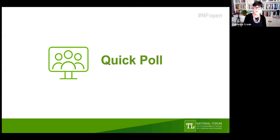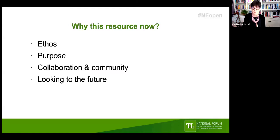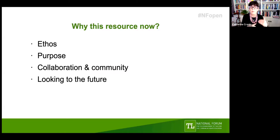It's really useful knowing that some people here are beginners or want to learn more and some are already supporting others. This was very much our intention in developing the resource — we thought it could be useful for people who just want to learn more as individuals but also for those already supporting others in their institutions in their open practice and trying to build open capabilities. So there are four key features we wanted to share before the URL: the ethos behind it, the purpose, the focus on collaboration and community, and looking to the future.